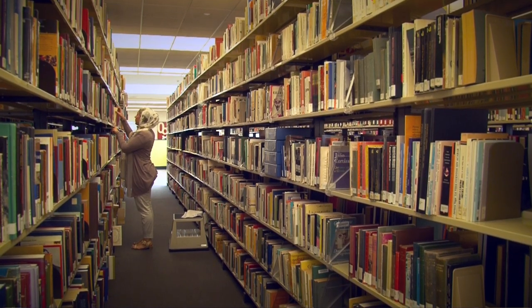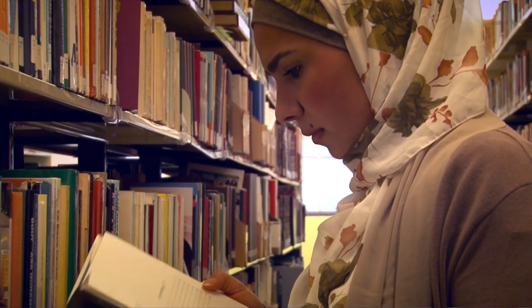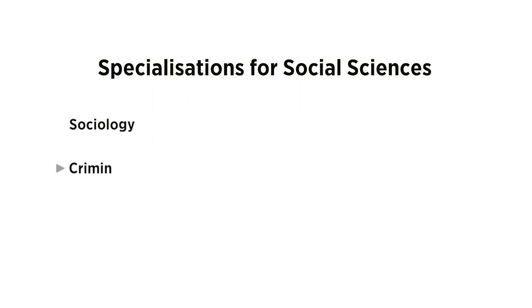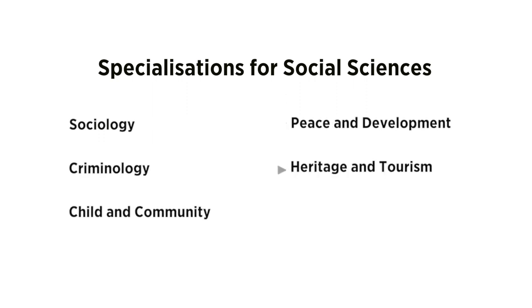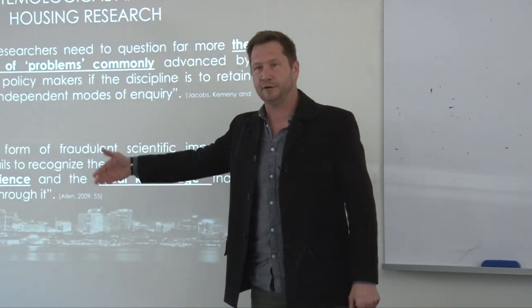Students also complete eight subjects in an area of specialisation. We currently have six specialisations on offer, which include sociology, criminology, child and community, peace and development studies, heritage and tourism, and geography and urban studies.